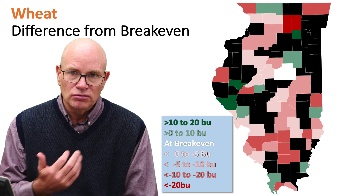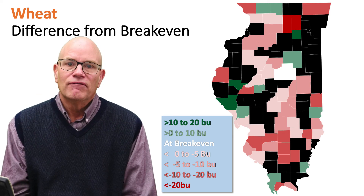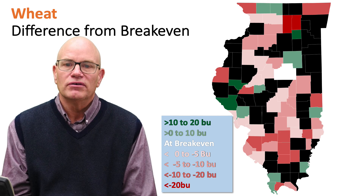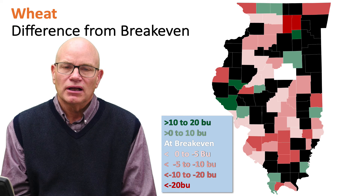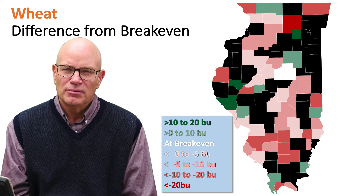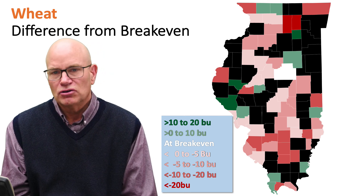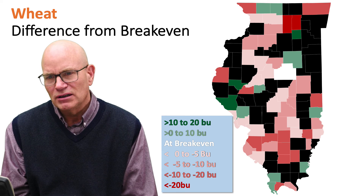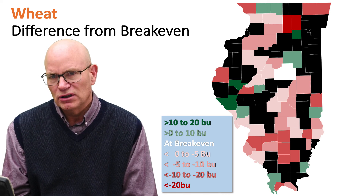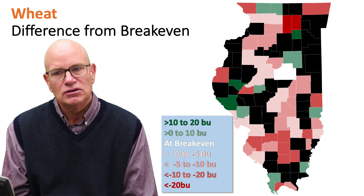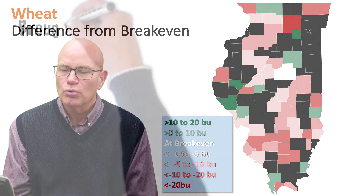So we've shown you our break-even yields. On February 20th, NASS will release the county yields so we can make those comparisons. Most likely the choices you will be making this year are PLC for corn, because in most cases we expect ARC county not to make payments for corn. For soybeans, we'll probably see more counties making payments, or more yields below those break-even yields. So stay tuned and look for that after February 20th.